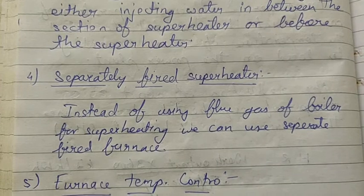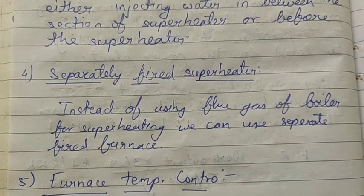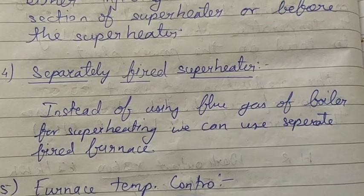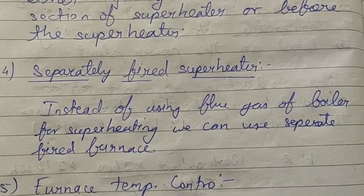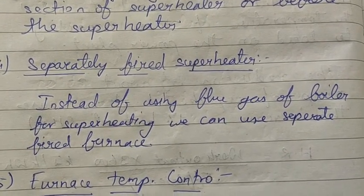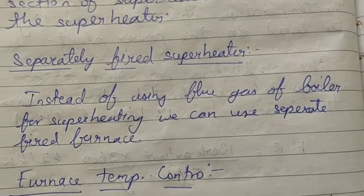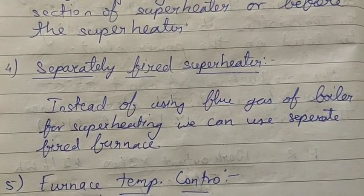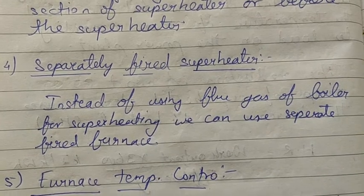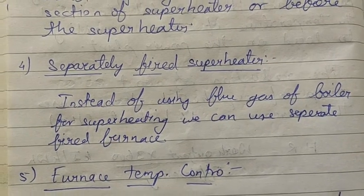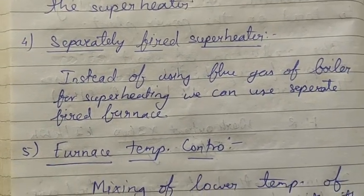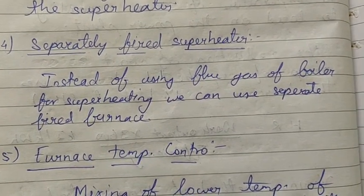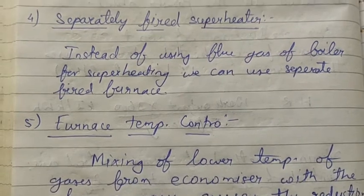Another method is the separately fired superheater. In this method, the superheater has its own separate firing arrangement, independent of the main boiler. This method involves additional fuel cost and is used only in rare cases, typically in small plants.